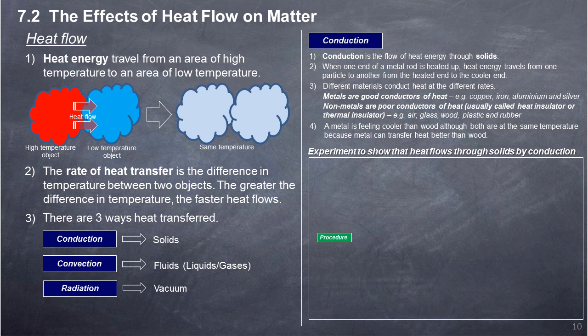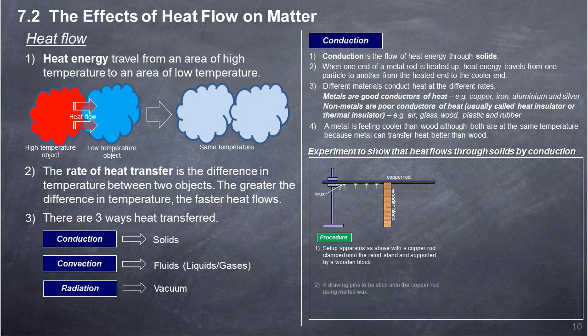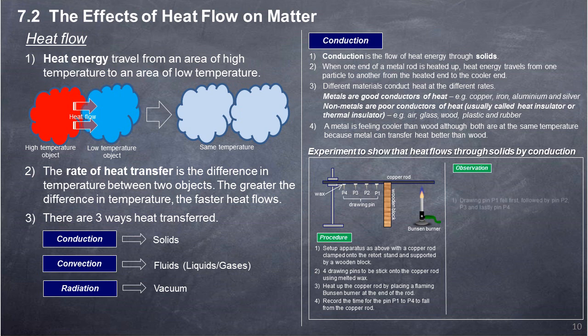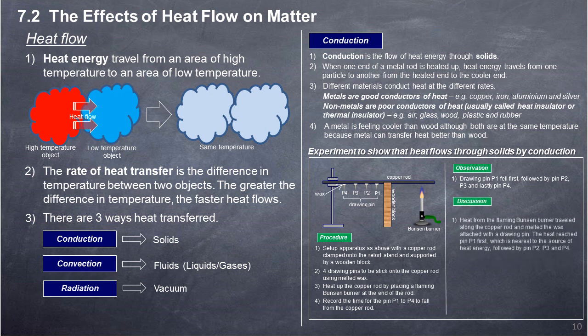Procedure: Set up apparatus with a copper rod clamped onto a retort stand and supported by a wooden block. Attach drawing pins onto the copper rod using melted wax. Heat up the copper rod by placing a flaming Bunsen burner at the end of the rod. Record the time for pins P1 to P4 to fall from the copper rod. Observation: Drawing pin P1 fell first, followed by P2, P3, and lastly P4. Discussion: Heat from the flaming Bunsen burner traveled along the copper rod and melted the wax attached to each drawing pin. Heat reached P1 first, which is nearest to the source, followed by P2, P3, and P4. Conclusion: Conduction is the flow of heat energy through solids, from the hot end to the cold end of the solid.